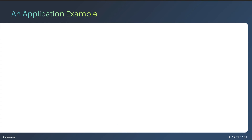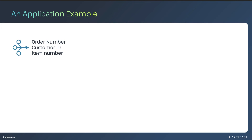Let's look at a simple example of combining data in motion with data at rest. Let's say you have a retail application. Your customer clicks on Submit Order, which generates real-time data that contains an order number, a customer ID number, and an inventory item number. This is current data, but it lacks context to be useful by itself.